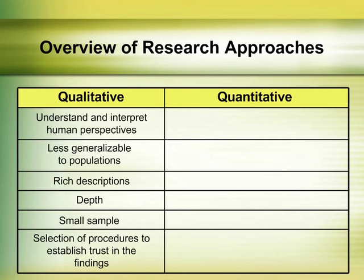Qualitative research generally uses a small sample to explore and describe experiences through the use of thick, rich descriptions of detailed data in an attempt to understand and interpret human perspectives. It is less interested in generalizing to the population as a whole. For example, when studying bullying, a qualitative researcher might learn about the experience of the victims and the bully by interviewing both bullies and victims and observing them on the playground.